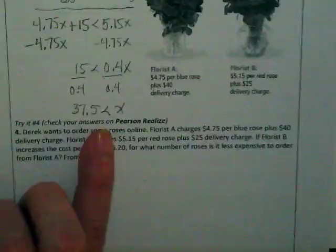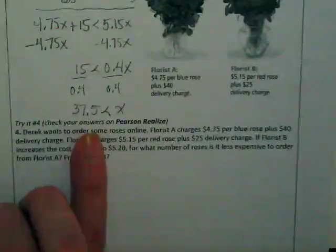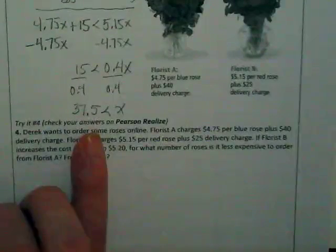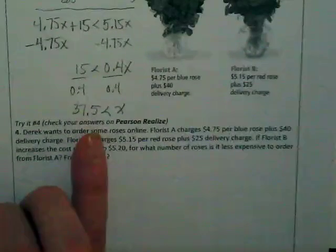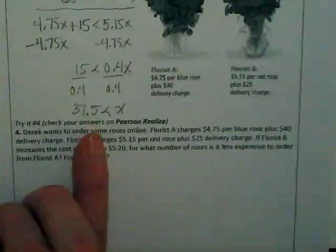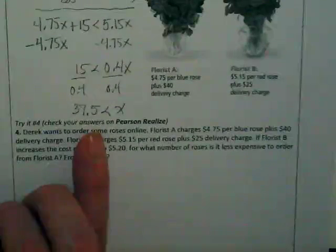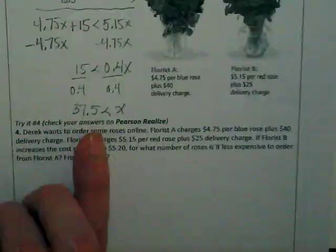But we need to think about this in terms of real world problem. This is 37 and a half roses. Which half of the rose would you want? The top half or the bottom half? The whole rose. You would want whole roses. We cannot round this up because the florist is not going to give you a half a rose for free.